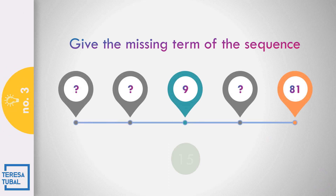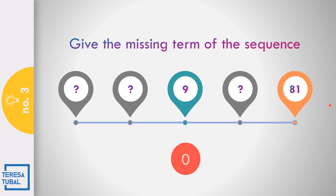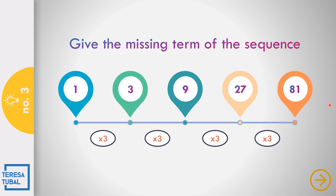How about number 3? Solve the missing term of the sequence: the third term is 9 and the last term is equal to 81. The answer is 1, 3, and 27, because the common ratio is equal to 3. 1 times 3 is 3. 3 times 3 is 9. 9 times 3 is 27. 27 times 3 is equal to 81.